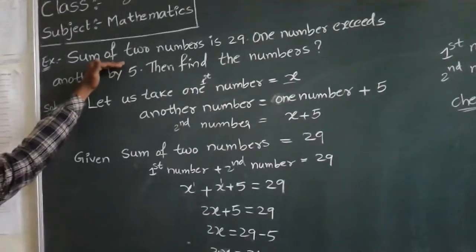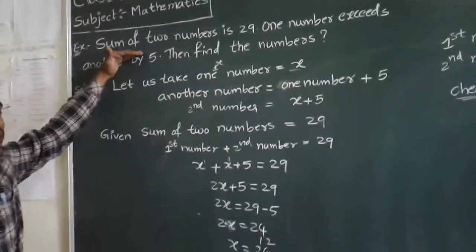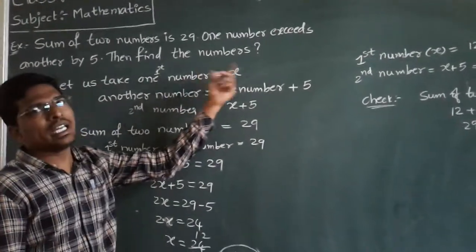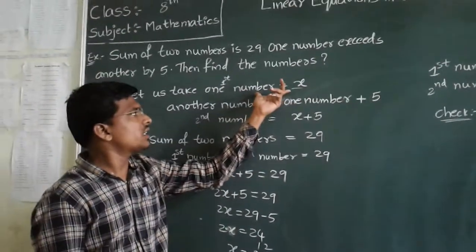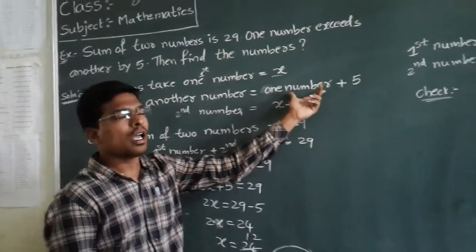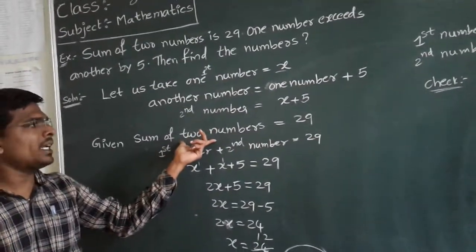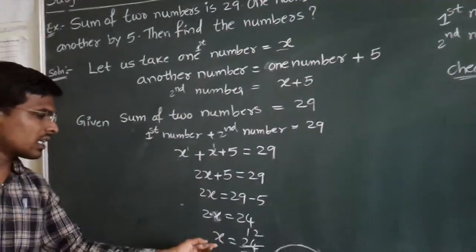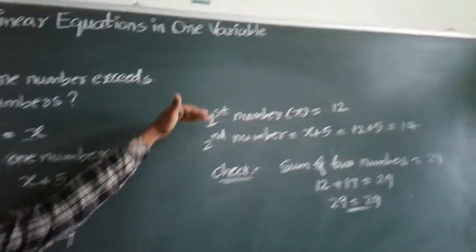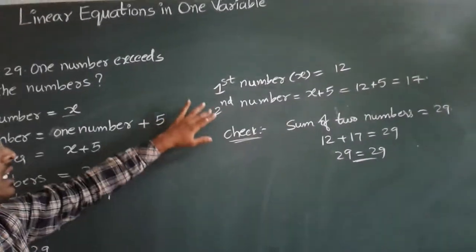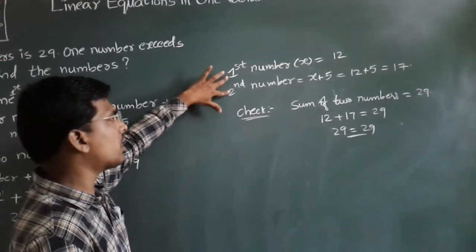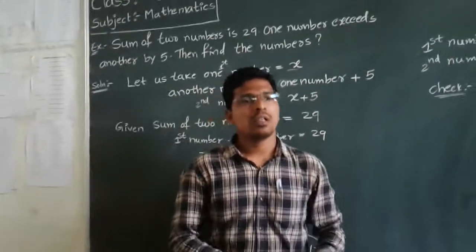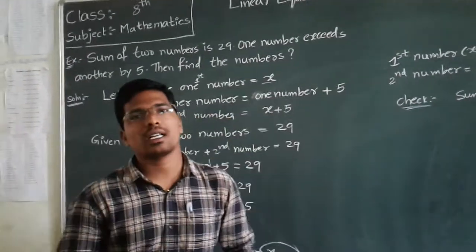For verbal questions like this, you have to read the question clearly and slowly, understand it, and if you don't know the numbers, take any variable x, y, or z. Based on the conditions, choose the second number. Using the main condition, solve the problem to get the x value, and from there find the first and second numbers. You can verify your answer to check if it's correct or wrong. We have more problems in the exercise — let's discuss those in our next class. Thank you.